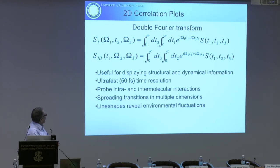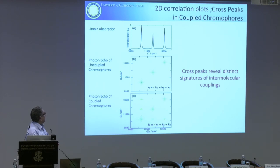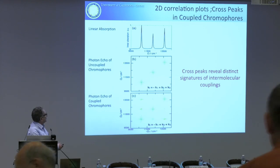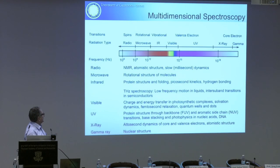For displaying the signals, we usually do a double Fourier transform with respect to the time delays and produce two-dimensional correlation plots. This whole approach came from NMR and gradually went up the frequency ladder. The main idea is that if you have several chromophores, they could be interacting or not and still give the same spectrum. If you do a two-dimensional spectrum and the chromophores don't talk, you get only diagonal peaks; if they do interact, you see cross peaks that contain information about the couplings — exactly what is used in NMR to get structure.